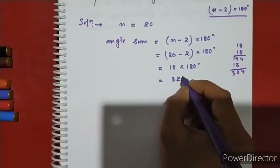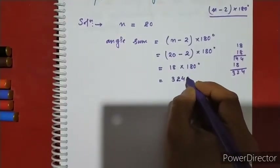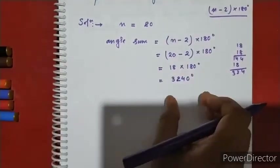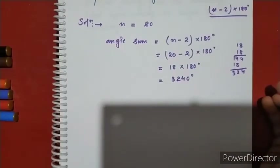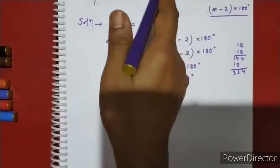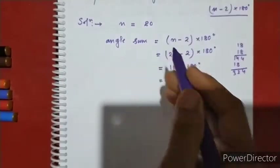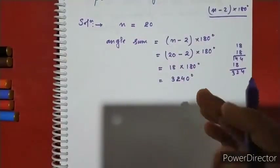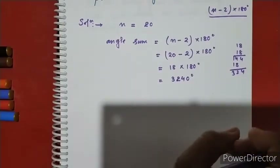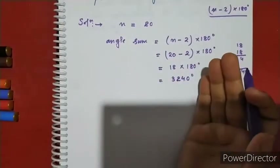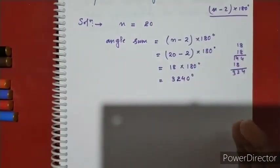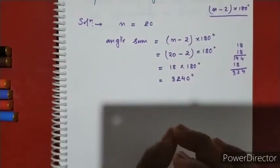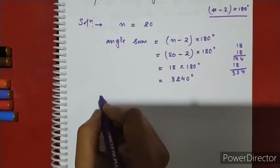The angle sum is 3,240 degrees. The internal angle equals the sum divided by the number of sides.